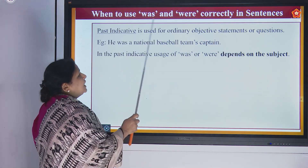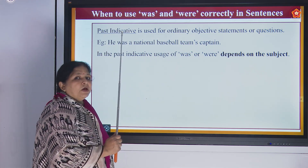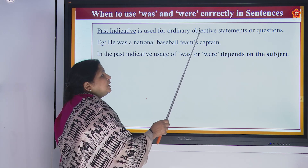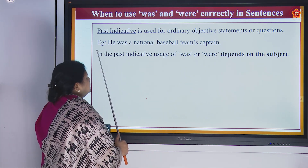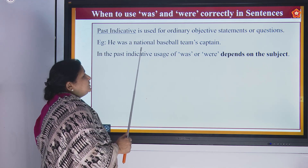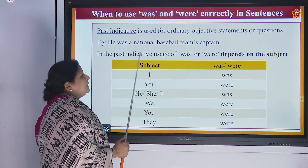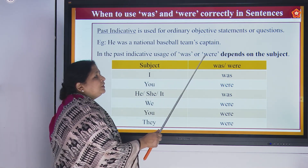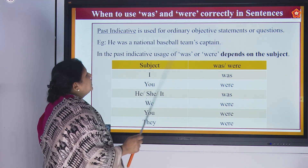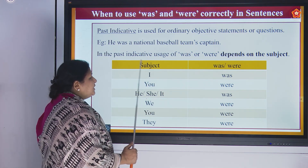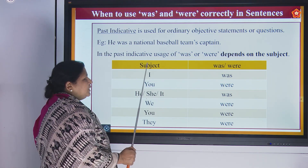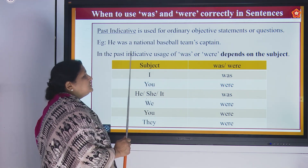When to use was and were correctly in the sentence — past indicative. Past indicative is used for ordinary, objective statements or questions. Example: 'He was a national baseball team's captain.' In the past indicative, usage of was or were depends on the subject. If the subject is 'I', use was. If 'you', use were. If 'he', 'she', or 'it', use was.